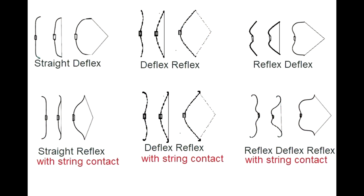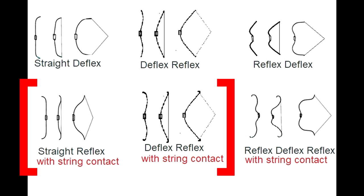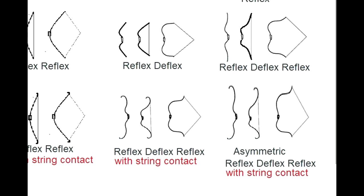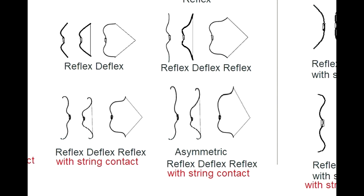Then you've got the straight-reflex, which typically comes with string contact. To put it simply, modern Olympic bows are in this category, except the riser is a fancy shape. Then you have the deflex-reflex with string contact — a lot of Egyptian and Syrian style bows are like this, with some string contact depending on the bow. And then there's the asymmetric reflex-deflex-reflex with string contact, which would be more of a Scythian style bow.